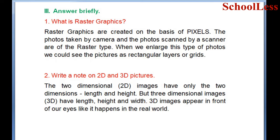Write a note on 2D and 3D. Two-dimensional or 2D images have only two dimensions: length and height. Three-dimensional or 3D images have length, height, and width. 3D images appear in front of our eyes like they appear in the real world.